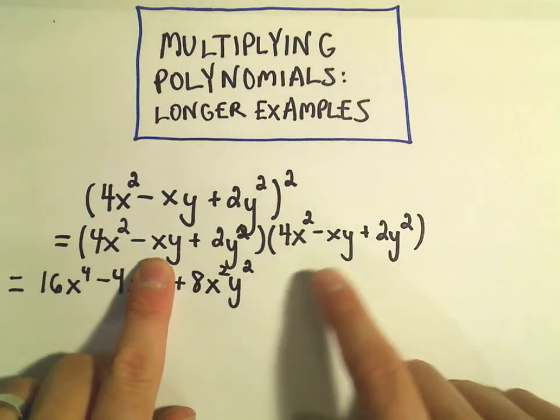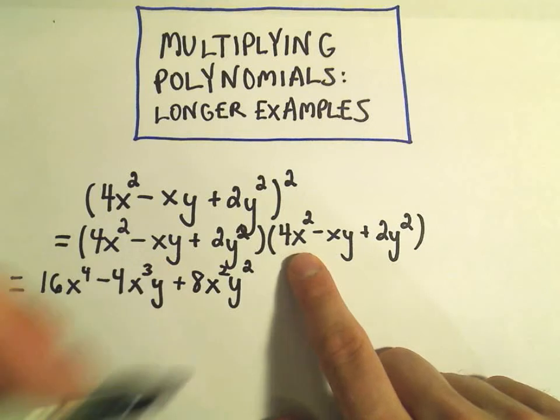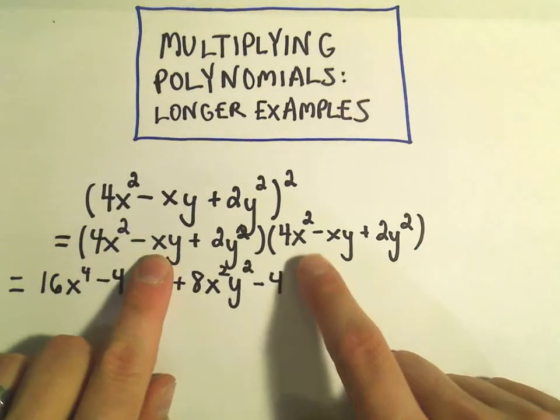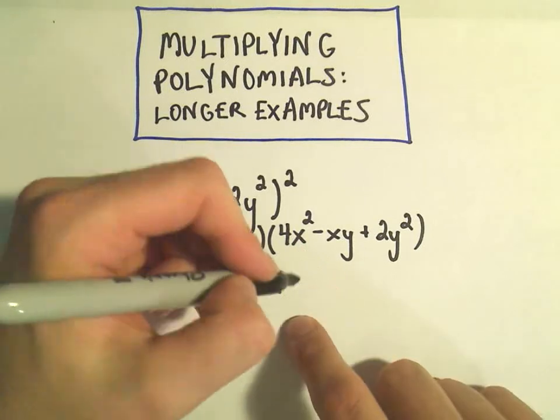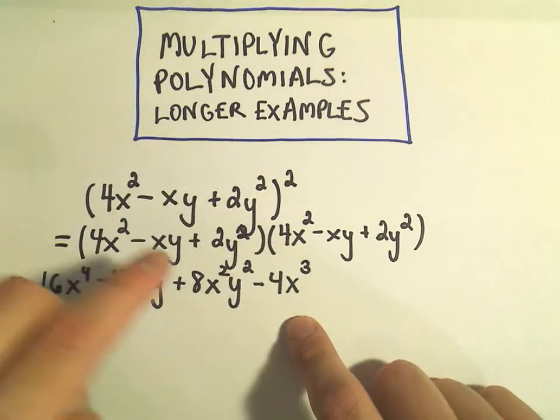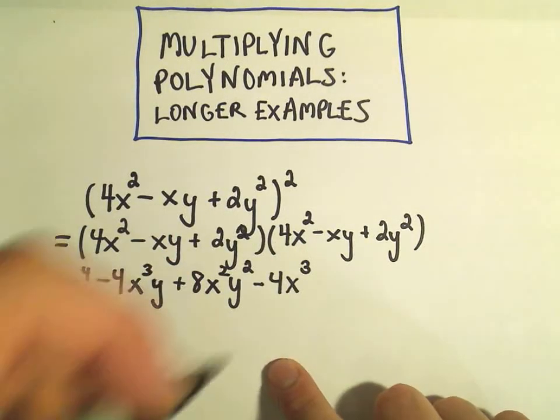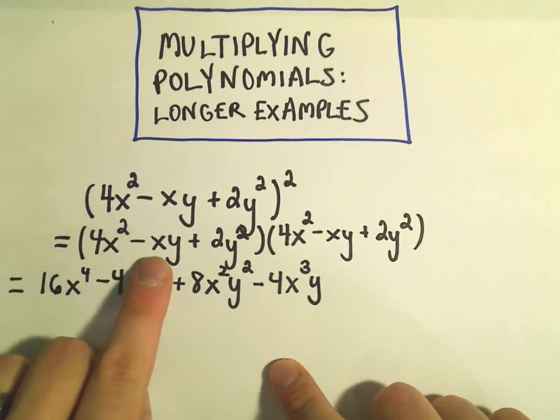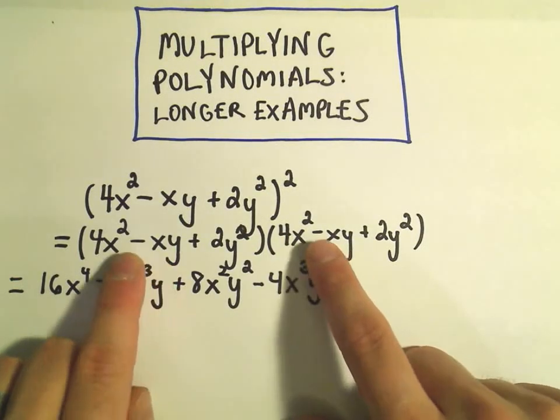In the middle we have negative xy times 4x², which would give us negative 4. The x to the first and x² we'll multiply to be x to the third. And then again we just stick our y on there. I've got negative xy times negative xy. So two negatives will make a positive.